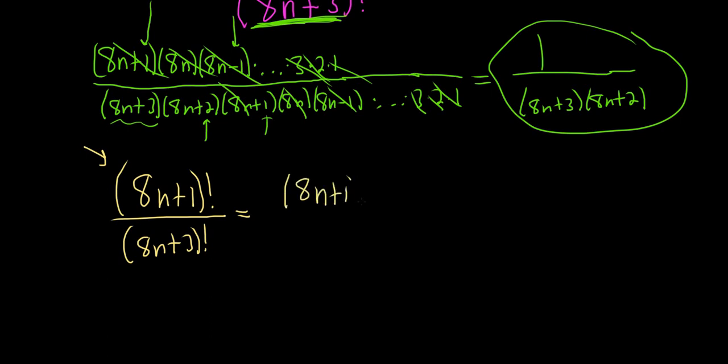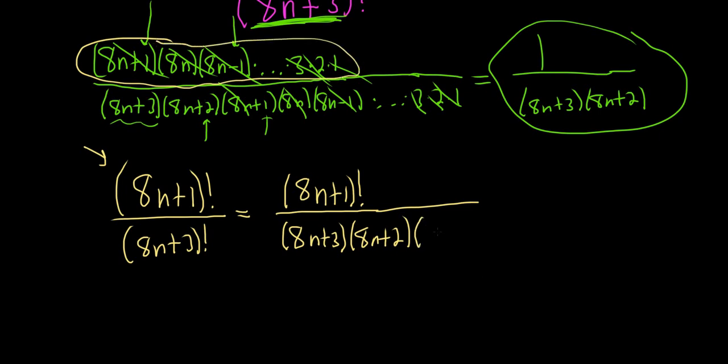This is 8n plus 1. And it's kind of important to understand the previous solution before you can understand this one. So this would be 8n plus 3, 8n plus 2. And now what's the rest of this? Well, the rest of this is 8n plus 1. It's all of this, right? It's all of this stuff. So all that stuff is just 8n plus 1 factorial.